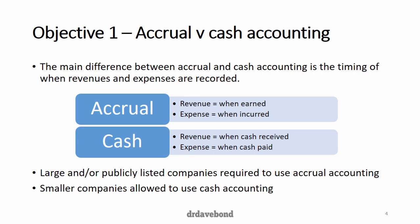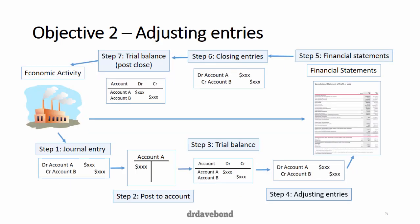Large and publicly listed companies are required to use accrual accounting. Smaller companies are allowed to use cash accounting. This really has to do with the types of stakeholders interested in these particular entities and what the purposes are of having access to their financial statements.